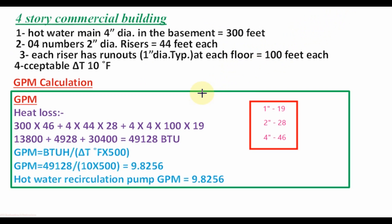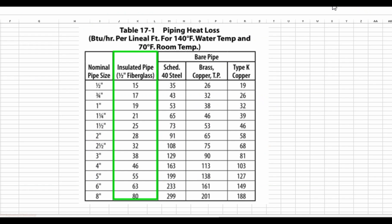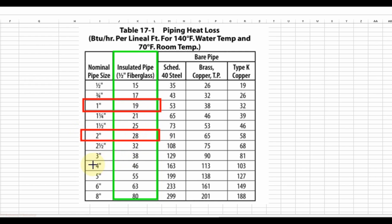To calculate the GPM for the hot water recirculation pump, first we will calculate the total heat loss in the hot water supply piping. From this table we will select the heat loss rate in BTU per hour per linear feet of pipe at 140 degrees Fahrenheit. For 1 inch insulated pipe, the heat loss rate is 19 BTU per hour per linear feet. For 2 inch pipe size it is 28, and for 4 inch pipe size it is 46.